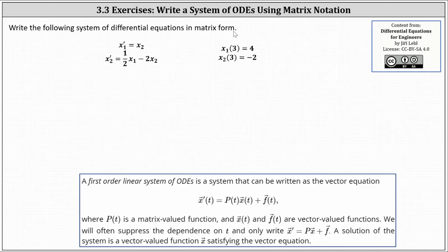To write in matrix form, we want to write the vector equation below using matrices, where the vector equation is x prime of t equals p of t times x of t plus f of t, where p of t is a matrix-valued function, and x of t and f of t are vector-valued functions.